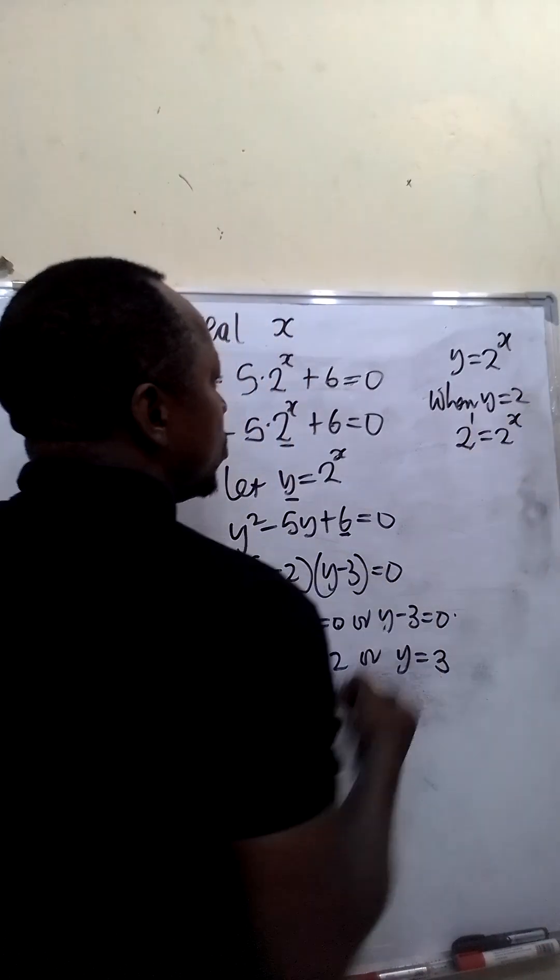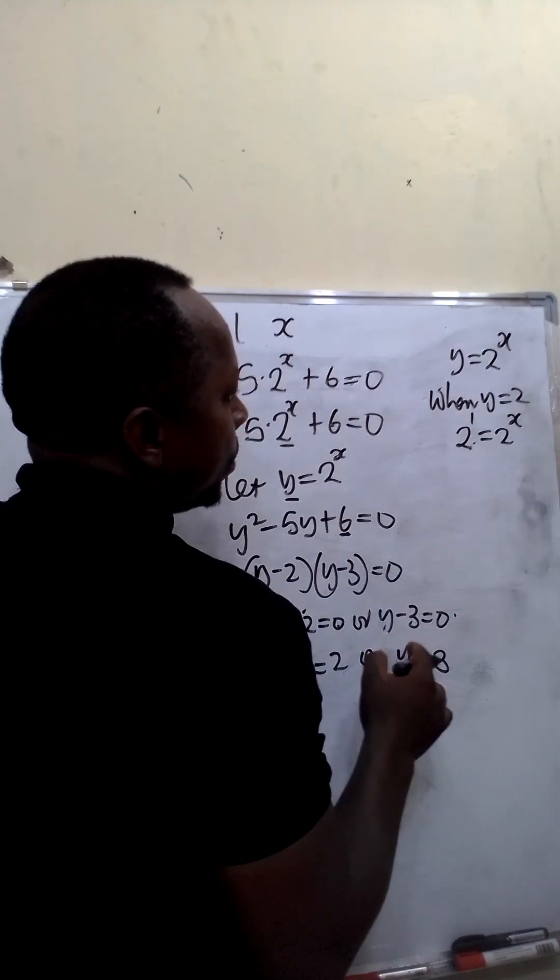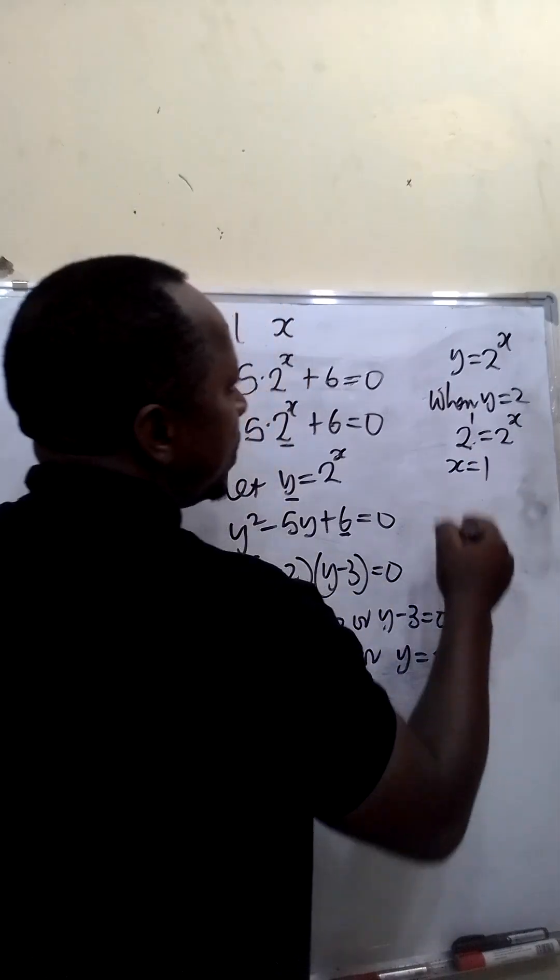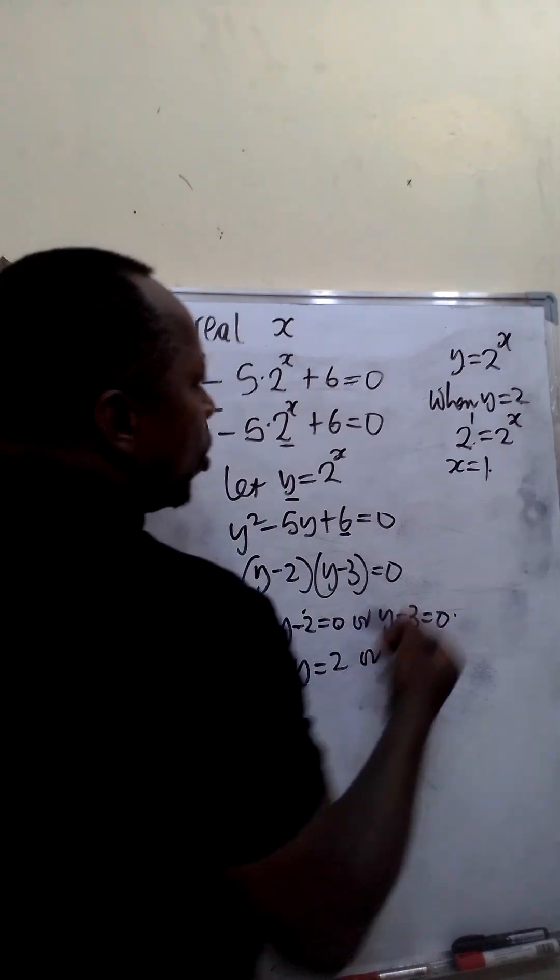Now 2 is written as 2 raised to the power 1. The bases are the same. It means the power will be the same. So x will be equal to 1. This means when y is equal to 2, our value of x is 1.